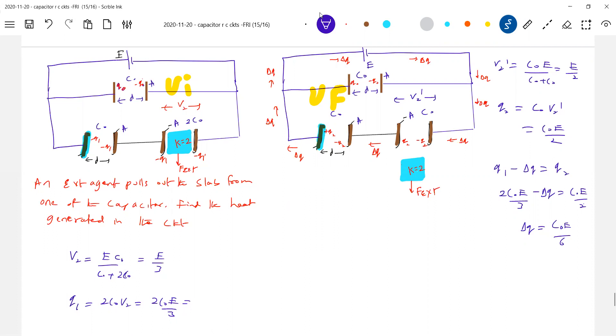So battery does negative work. So again, Ui plus work done by cell plus work done by external agent is needed. Work done by external agent, this should be equal to mod of Q2 square by 2C0, Q2 square by 2C0, 4C0 Q2 square by 2C0.